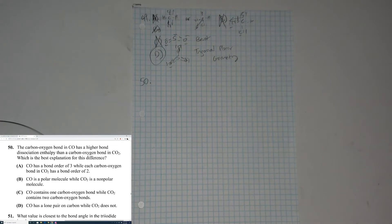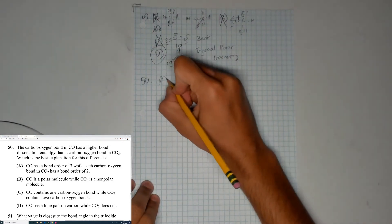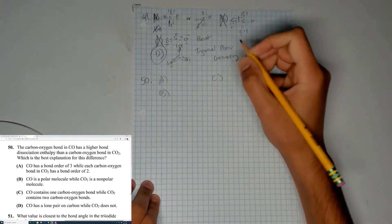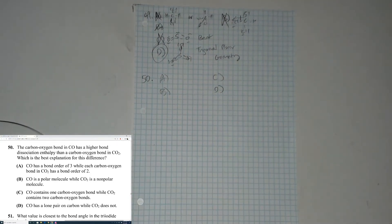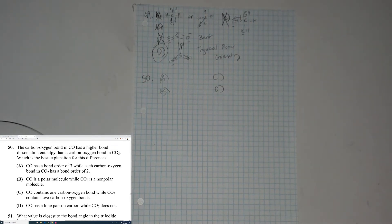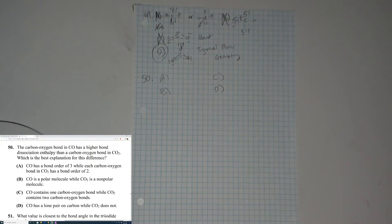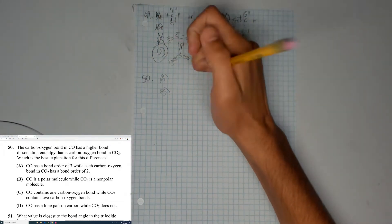Moving on to question 50: the carbon-oxygen bond in carbon monoxide has a higher bond dissociation enthalpy than the carbon-oxygen bond in CO2. The bond order of CO is three, while each bond in CO2 has a bond order of two. A higher bond order means more energy is required to break the bond. CO has a bond order of three while CO2 has a bond order of two for each bond.